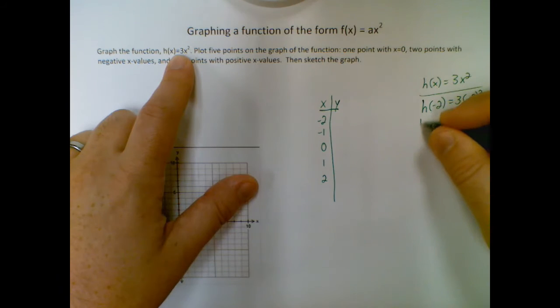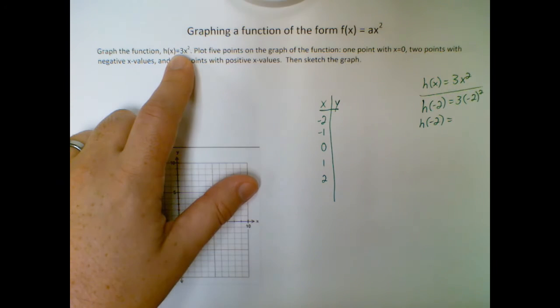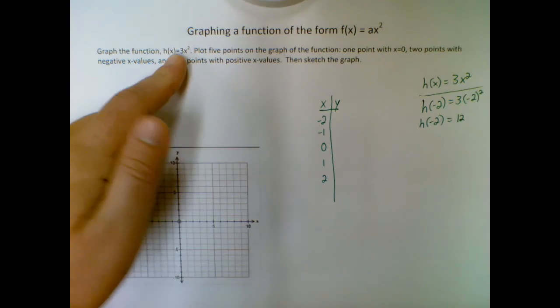So working this out though, negative two squared is positive four because we're squaring the two and the negative sign there. So three times four gives me a 12.